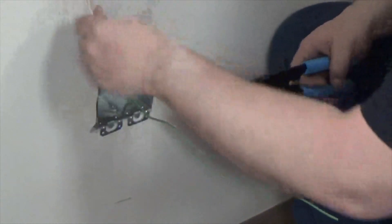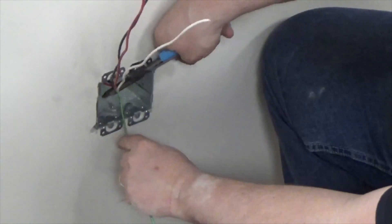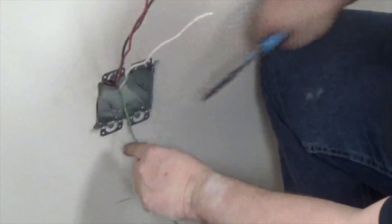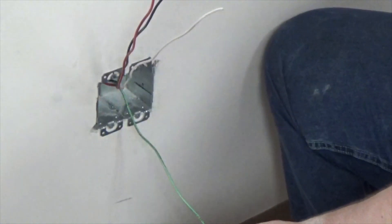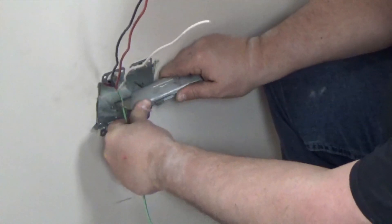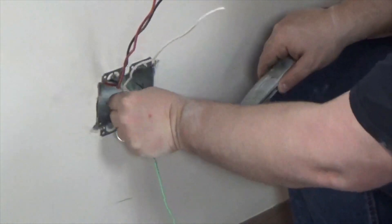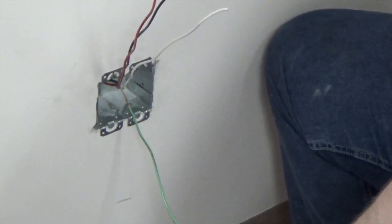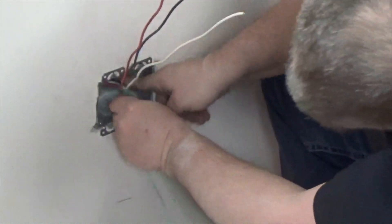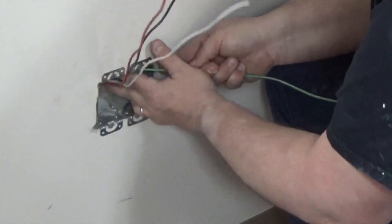Alright, when connecting this, what I'll do is I will cut my green insulation and I'll strip out about an inch or so. Take my razor knife and then I will remove the insulation and then I will wrap it clockwise around my ground screw. And my box will be grounded.